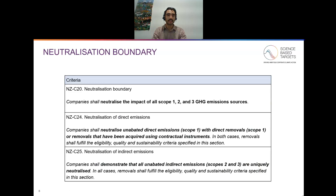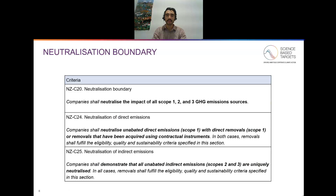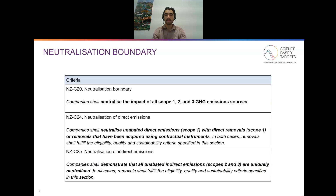I want to note that we have consultation questions related to all of the criteria you're going to see in this presentation, specified at the end of the slideshow. To achieve NZC24 and neutralize direct emissions, companies have the option of neutralizing their scope one emissions with either direct removals — removals within the operational boundary — or removals acquired using contractual instruments, for example removal credits. When it comes to neutralizing indirect emissions in scopes two and three, companies have a little more flexibility.